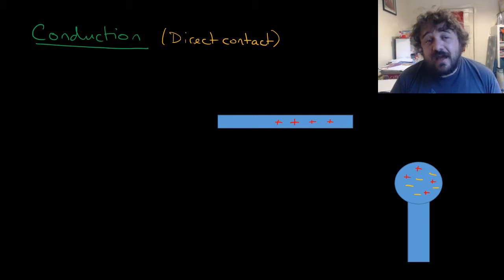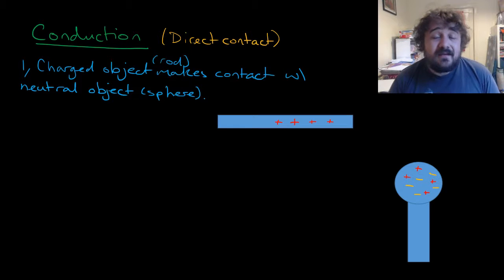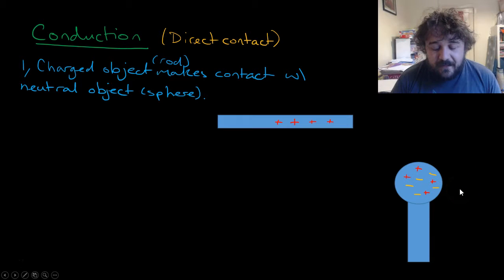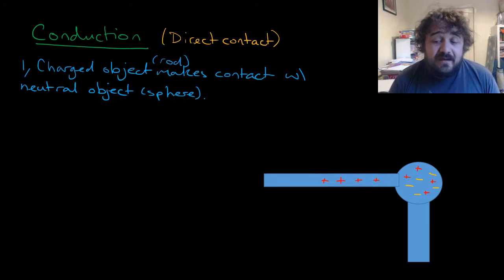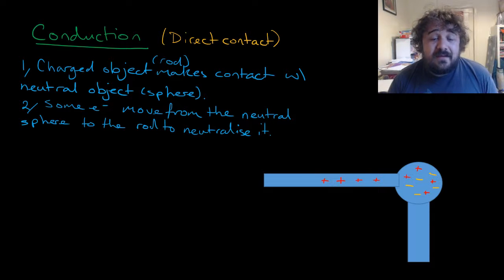All right, so let's have a look at conduction, which is direct contact. So basically the first step is you get a charged rod, in this case we have a positive rod, and it makes contact with the neutral object. So in this case here is the metal sphere down here. So it makes contact and it comes down, and when it does that, some of the electrons move from the metal sphere or from the neutral object to the rod in an attempt to neutralize it.